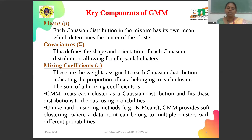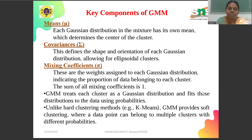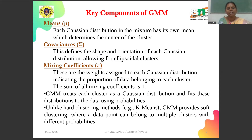Let me explain the key components of the Gaussian mixture algorithm. We have three components: mean, covariance, and mixing coefficients phi. The mean determines the center of each cluster. The covariance gives the shape and orientation of each Gaussian distribution. The mixing coefficients give the weights assigned to each Gaussian distribution, indicating the proportion of data belonging to each cluster. GMM treats each cluster as a Gaussian distribution and fits these distributions to the data using probabilities.